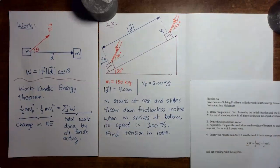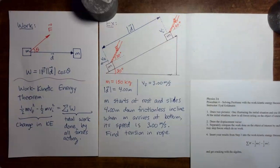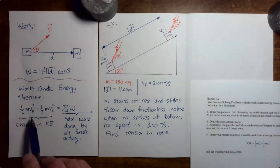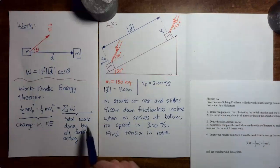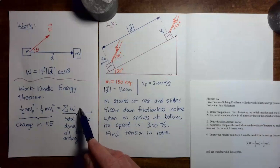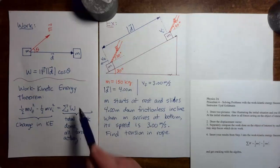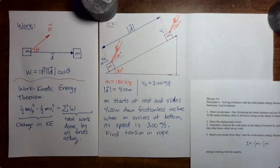In this video, we're going to be doing a second example problem which uses the idea of work and the work-kinetic energy theorem. The work-kinetic energy theorem says that the change in the kinetic energy of an object as it goes through some process is the total work done on that object by all forces acting on the object as the object goes through that process.